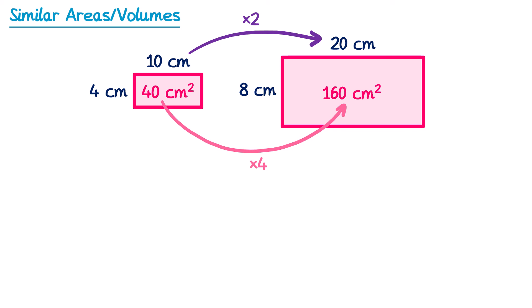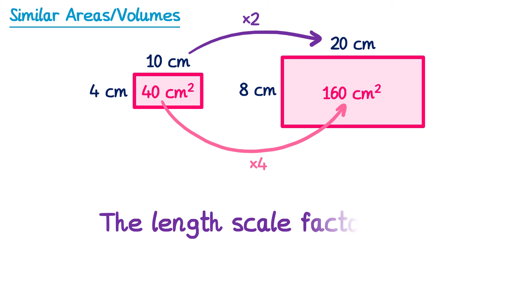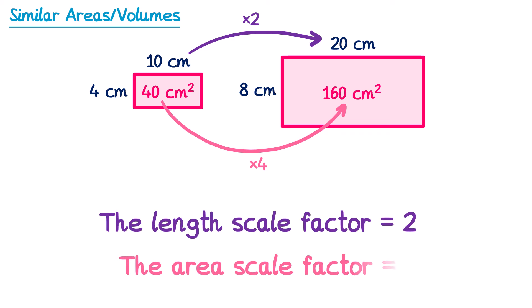At first this might seem surprising but it does make sense. Since the 10cm has been doubled to 20, and also the 4 has been doubled to 8, and then we multiplied those together, the overall result is multiplying by 4. So what we have here is two different scale factors at play: the scale factor for the length, which is 2, and the scale factor for the area, which is 4.